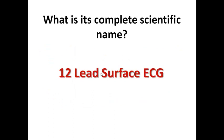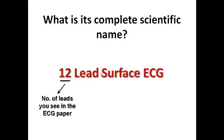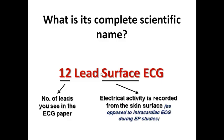The complete scientific name is the 12-lead surface ECG. '12' comes from the number of leads — 6 limb leads and 6 chest or precordial leads. 'Surface ECG' refers to electrical activity recorded from the skin surface, as opposed to intracardiac ECG used during EP studies or ECG recorded from pacemakers.